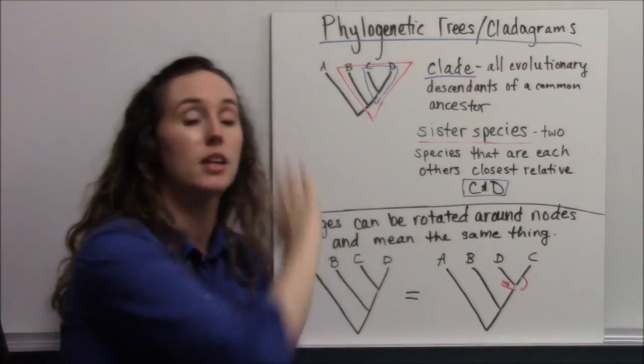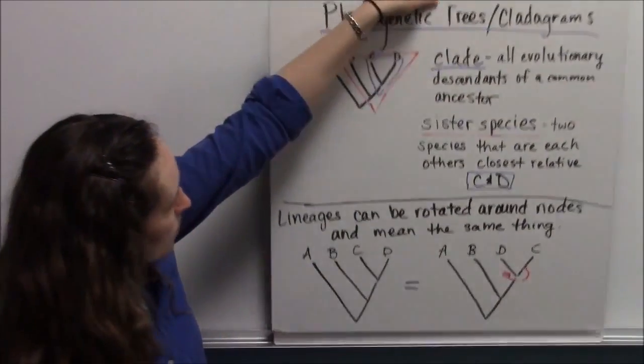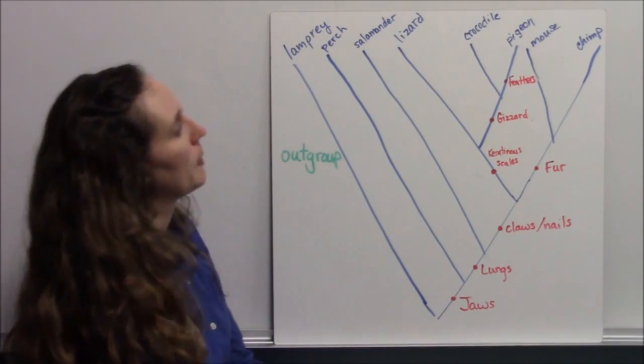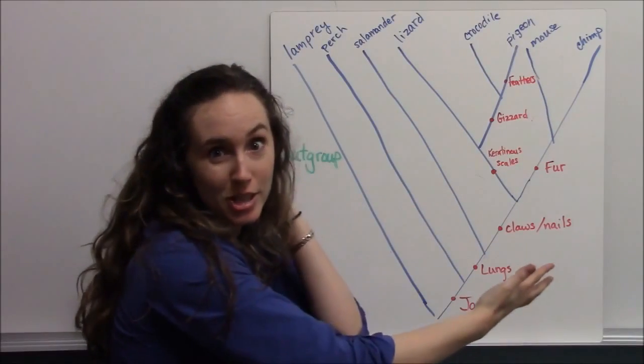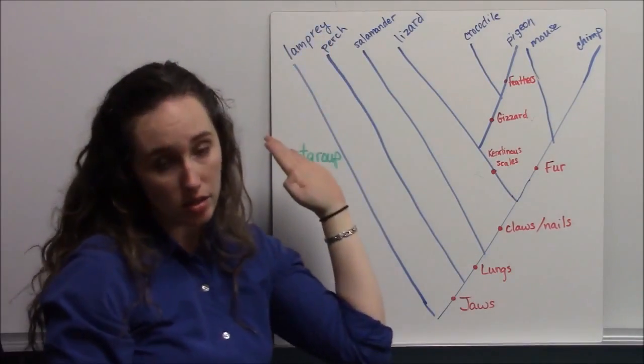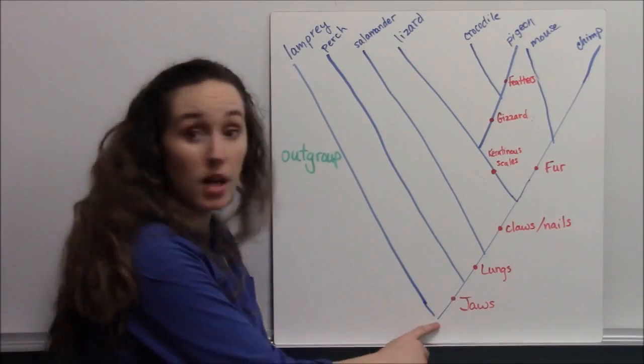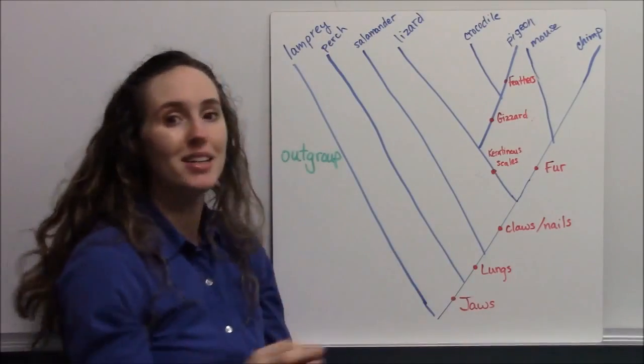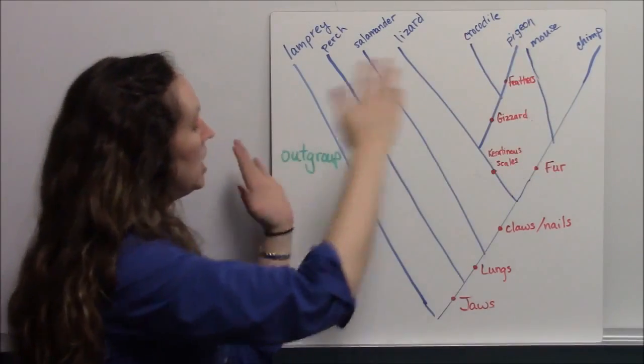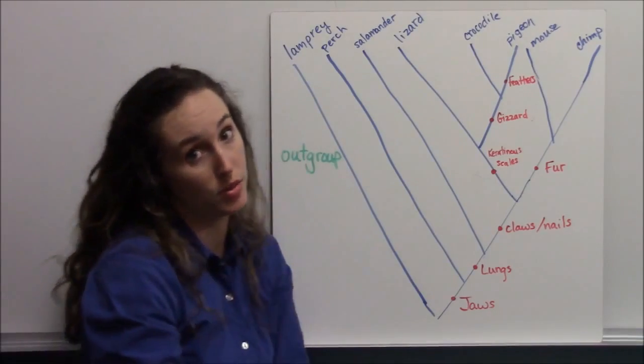Let's take a look at a big example and apply some of these things that we've learned. This is a big phylogenetic tree. Phylogenetic trees always on the far side have what's called an out-group. It's an organism that shares a common ancestor with all of the others, but does not share any of the derived traits that have evolved over time. In this case, we're looking at lampreys. Lampreys are jawless fish.